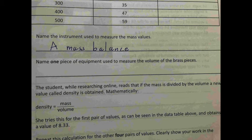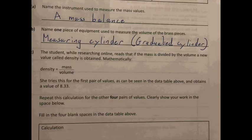To measure mass values you're going to use a mass balance, you could also say an electronic balance but not a lab balance and definitely don't say weighing scales that's no good. You can't go wrong with mass balance here. One piece of equipment used to measure volume is a measuring cylinder or a graduated cylinder and to figure out the density you just divide the mass by the volume.